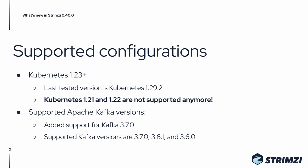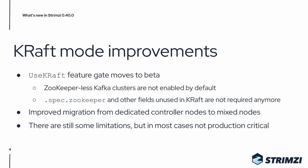Most of the work in this release went to improving the KRaft mode. The UseKRaft feature gate moves to beta, and that means it's now enabled by default. So if you want to use ZooKeeper-less Kafka clusters, you do not have to enable it anymore. Also, the ZooKeeper-related fields in the Kafka custom resource are not required anymore, and you don't have to specify them when using KRaft.